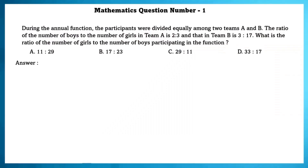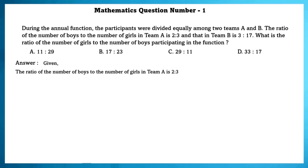Classics Level 2 IMO Mathematics question number 1. During the annual function, the participants were divided equally among two teams A and B. The ratio of the number of boys to the number of girls in team A is 2:3, and that in team B is 3:17. What is the ratio of the number of girls to the number of boys participating in the function?